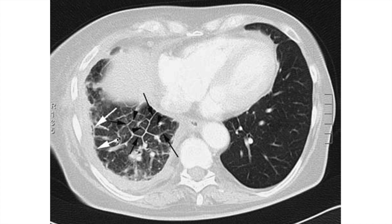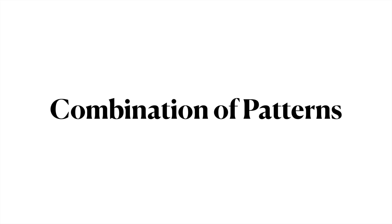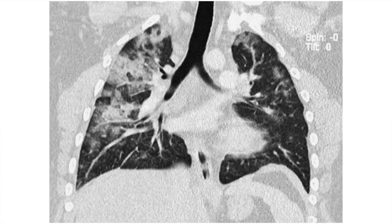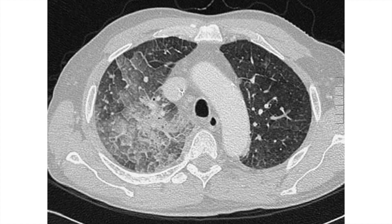Here we can see interstitial thickening presenting as a linear pattern. There can be a combination of these four patterns that may be pathognomonic of a particular disease. For example, areas of consolidation and ground glassing combined with a reticular linear pattern is called crazy paving.